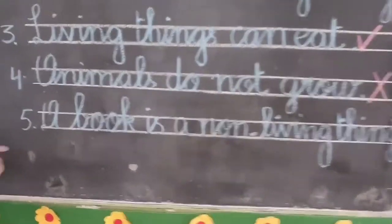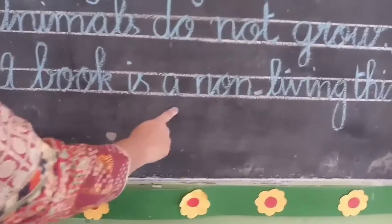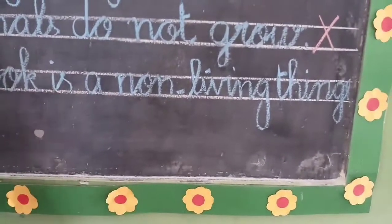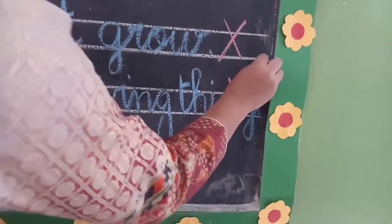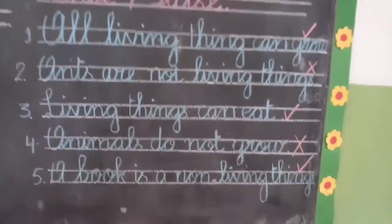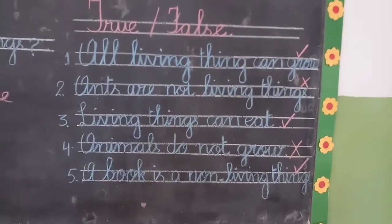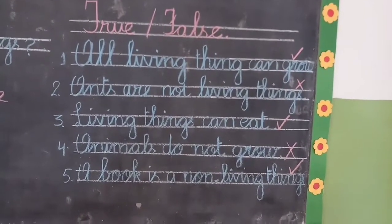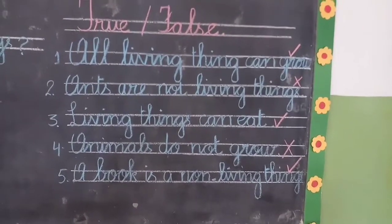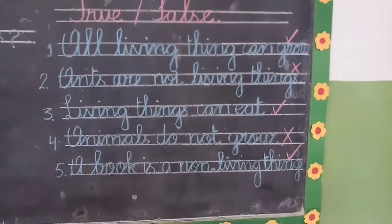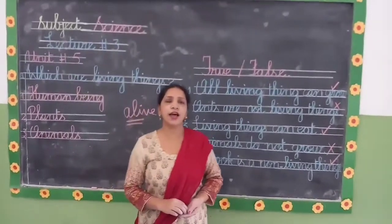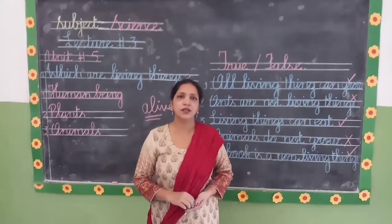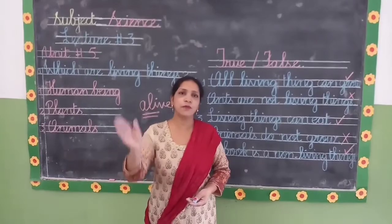Number five: a book is a non-living thing. It's true. Yes, book jo hain wo be-jaan hain, isliye ye true hai. Dear students, I hope you all have learned it very well. See you till the next video. Bye-bye.